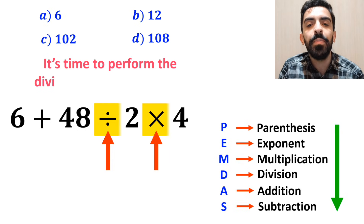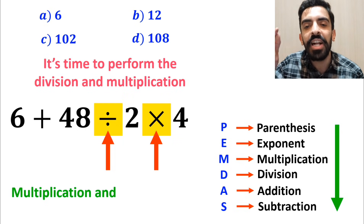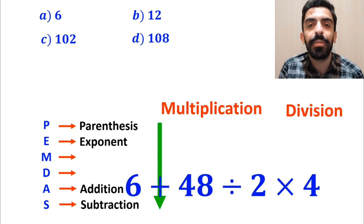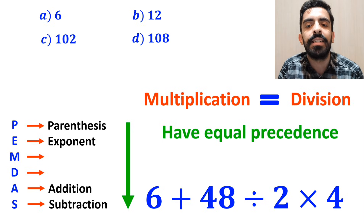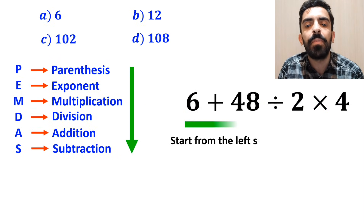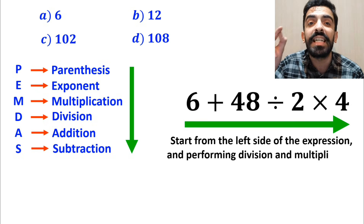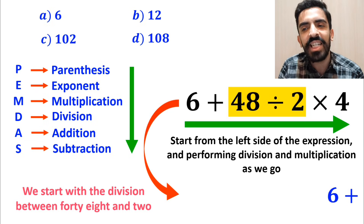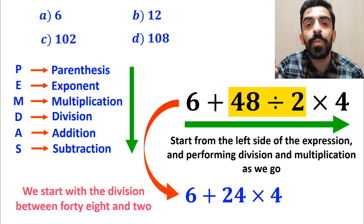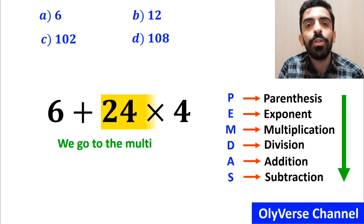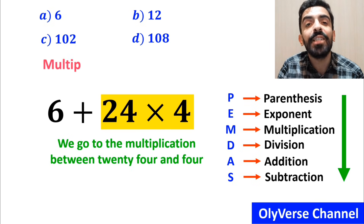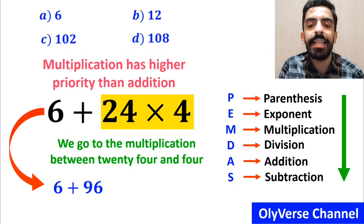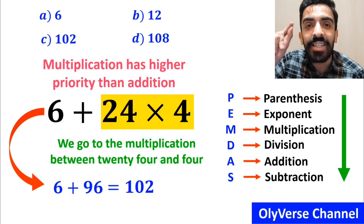Now it's time to perform the division and multiplication because they have higher priority than addition. However, we must pay close attention that multiplication and division have equal precedence. In this case we start from the left side of the expression. We start with the division between 48 and 2, writing 6 plus 24 multiplied by 4. Then we perform the multiplication between 24 and 4, giving us 6 plus 96, which ultimately gives us the answer 102.